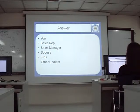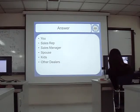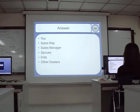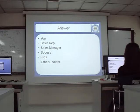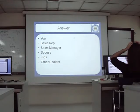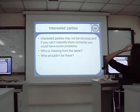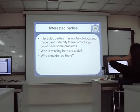Traditionally people think it's just you, the buyer and the seller, as parties for that simple negotiation. But actually, the sales rep may have a sales manager who is also an interested party. My spouse — husband or wife — kids, right? They are going to be affected by what kind of car I buy. Other dealers can also be interested because they can give me a better offer. So interested parties might not be obvious.